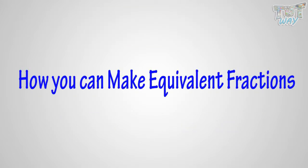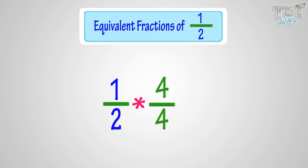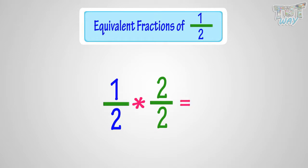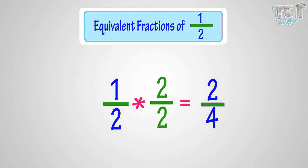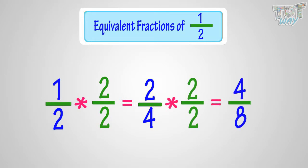Now let's learn how you can make equivalent fractions. Let's make equivalent fractions of 1 by 2. You have to multiply both the numerator and denominator with the same number. It can be 2, 3, 4, or just any number. Here, we multiply both the numerator and denominator of 1 by 2 with 2, and we will get 2 by 4, which is the equivalent fraction of 1 by 2. Again, we will multiply both the numerator and denominator of 2 by 4 with 2, and we will get 4 by 8, which is an equivalent fraction of 2 by 4.